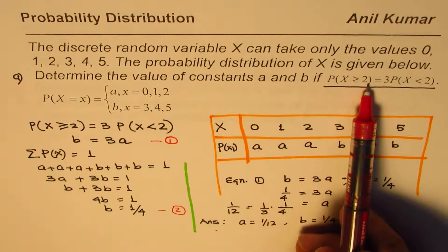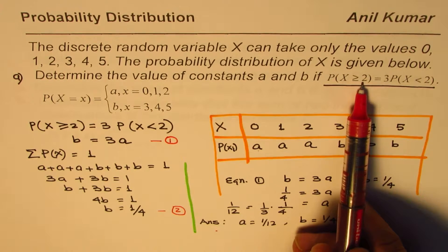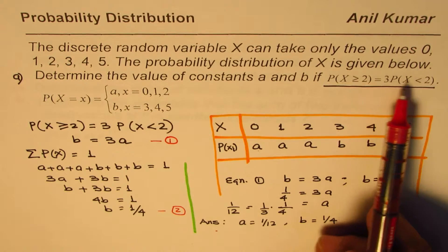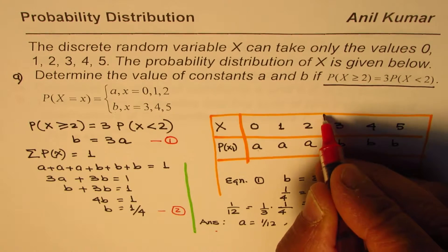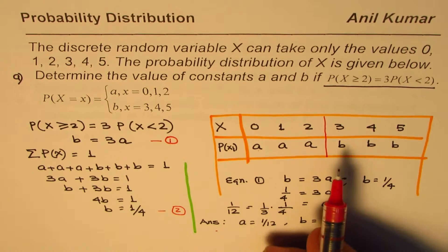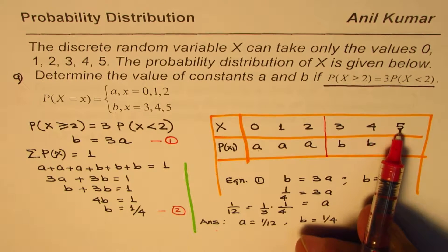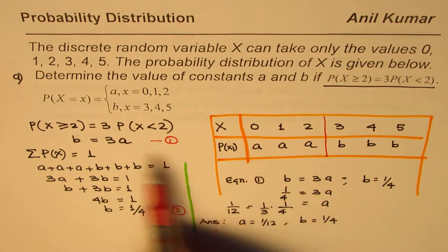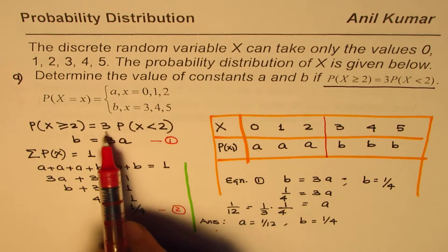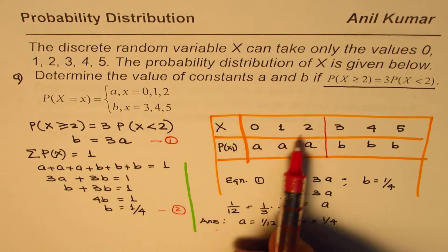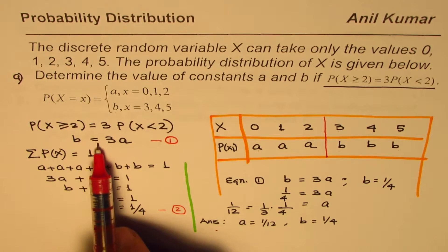Now, we know this condition which says that the probability for x greater than or equal to 2 is equals to 3 times probability for x less than 2. Now, that is this demarcation. So if x is greater than or equal to 2, it is one of these. Probability is B. So we write B is equals to 3 times, I rewrote this equation here, 3 times when x is less than 2, that is A. So that means B is equals to 3A.